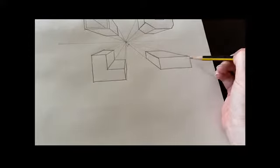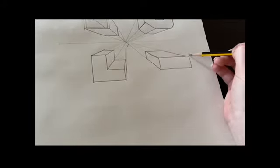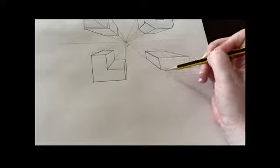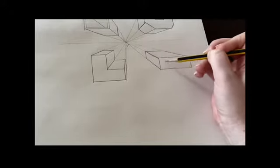As we remember from doing one point perspective, we start by drawing a 2D shape with one point perspective, but with two point we're going to start by drawing a leading edge.